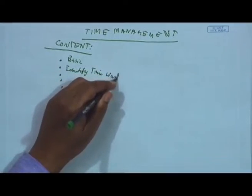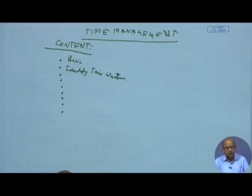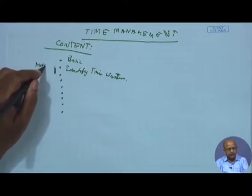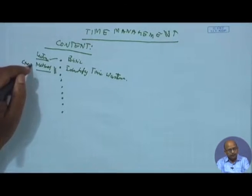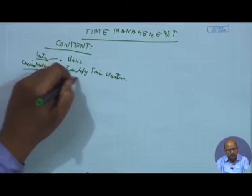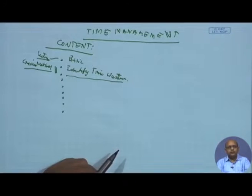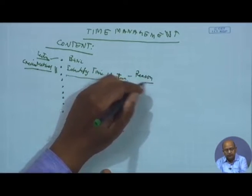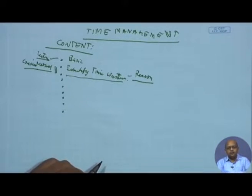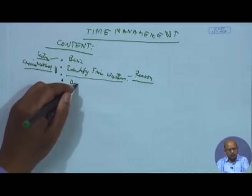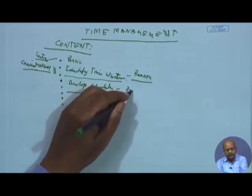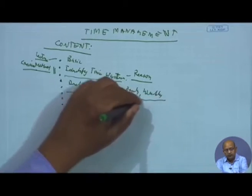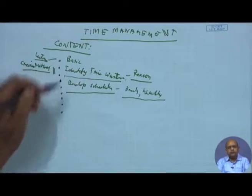For identifying time wasters, you can use a structured exercise as part of the method. You can use a lecture to deliver the basics, and then use an exercise asking each participant to identify what their time wasters are — why they waste their time and the reasons behind it. Then you can ask them to develop schedules, on a daily or weekly basis. Once you identify your time wasters, you know what you need to do and what you do not need to do.